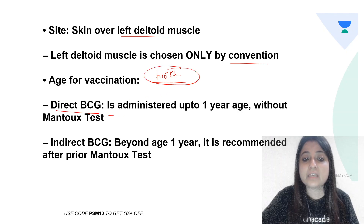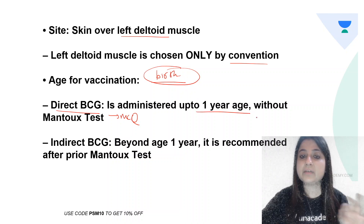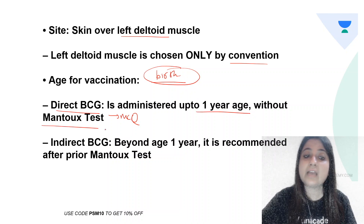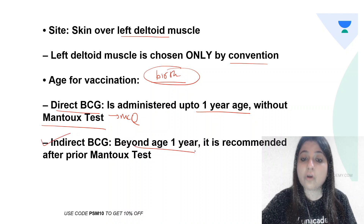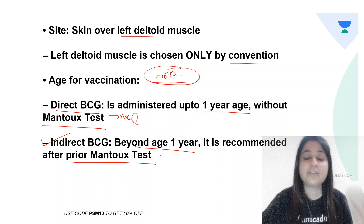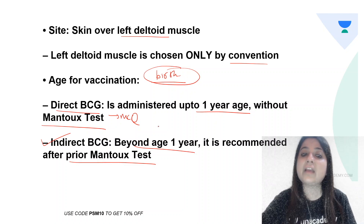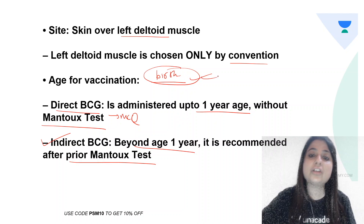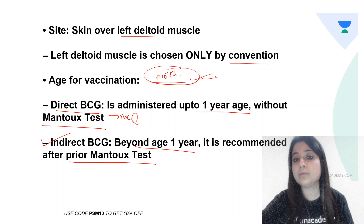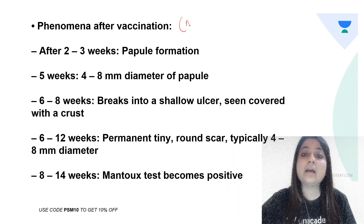An important MCQ: what is direct and indirect BCG? Direct BCG is administered up to 1 year of age without performing the Mantoux test. Indirect BCG is given beyond 1 year and is recommended only after performing a Mantoux test. In case of delayed immunization, direct BCG can be administered up to 1 year, but actually it is given at birth along with OPV and Hepatitis B.